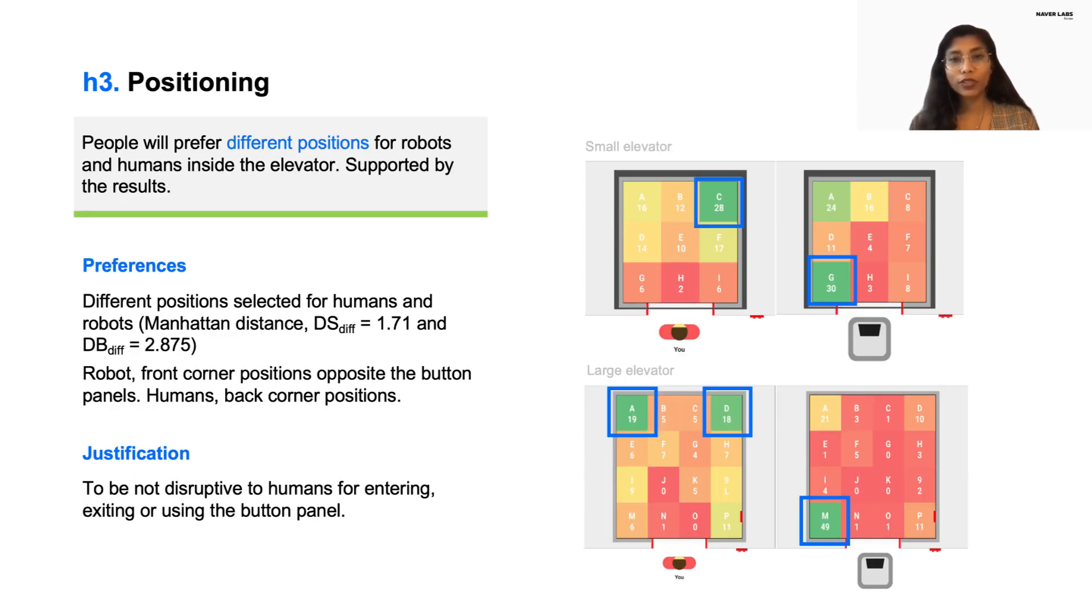We also wanted to understand the most preferred position for the robot inside an elevator and how and why these preferences change between a robot or a human. As seen in the figures, we provided a top view of the elevator divided in a grid identified by letters. Here participants selected the preferred position for the human or the robot. The cornered positions opposite to the button panels, that is G and A, were most preferred for robots in small elevators, and position M was most preferred in the large elevator.